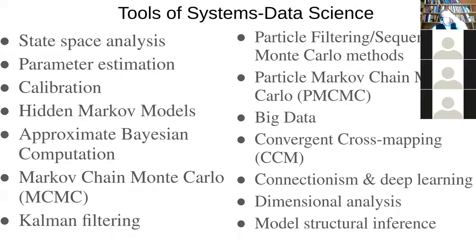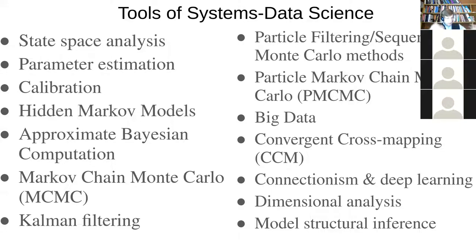Convergent cross mapping helps us use tools from state space analysis to identify causal connections between variables. Variable A may be driving variable B causally, or B driving A, or both driving each other. We can pick that up using observational data with convergent cross mapping — we can actually resolve what's a causal connection compared to a correlational relationship. Very powerful.